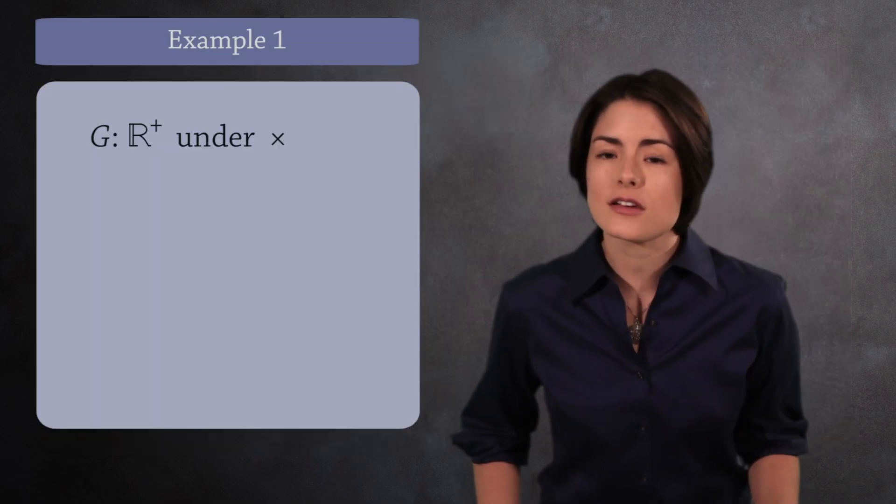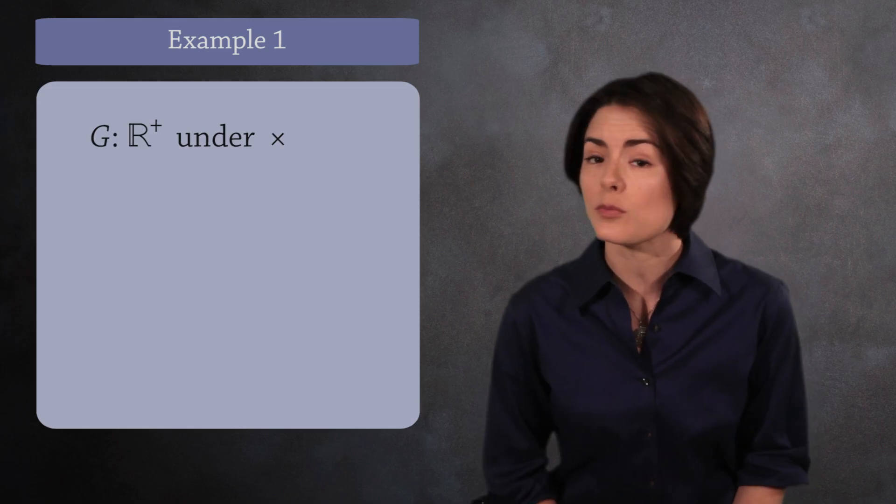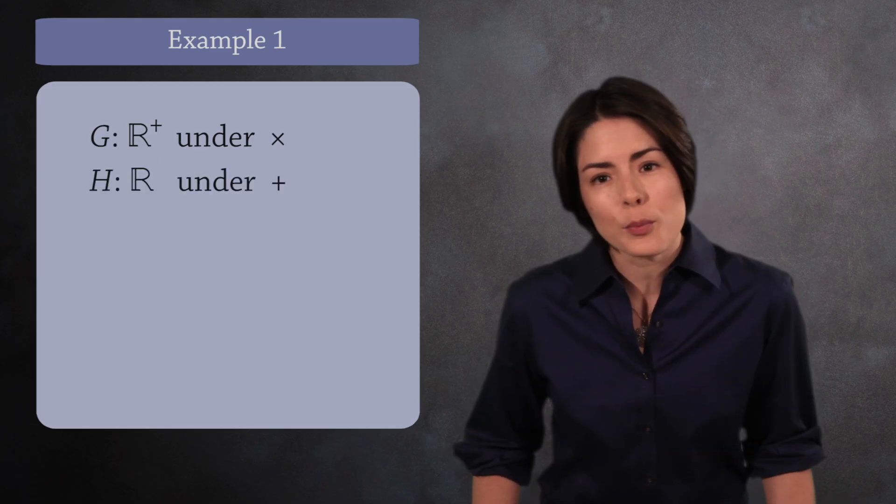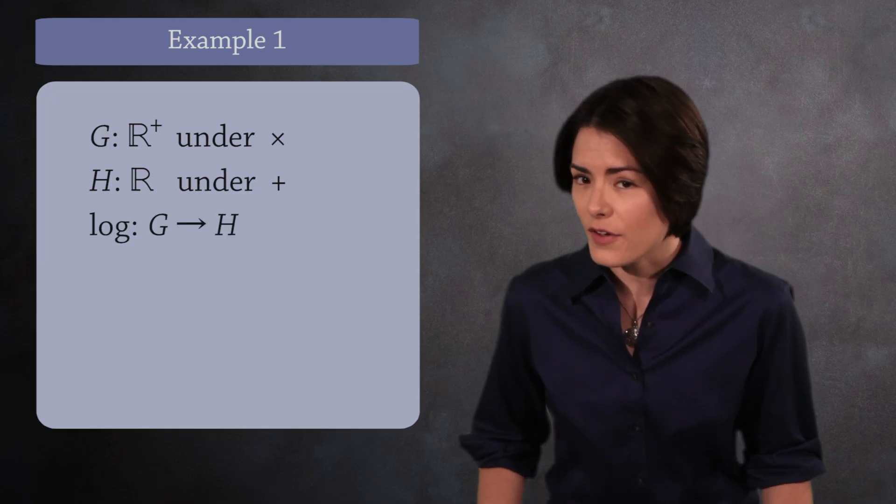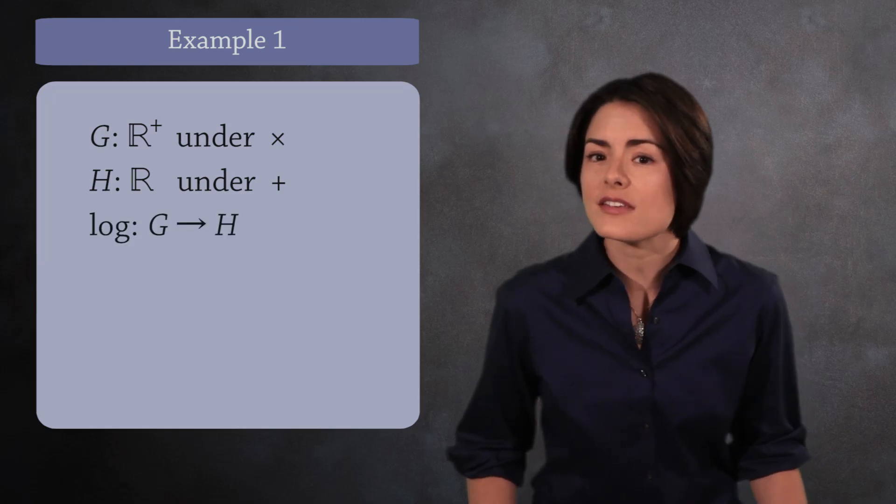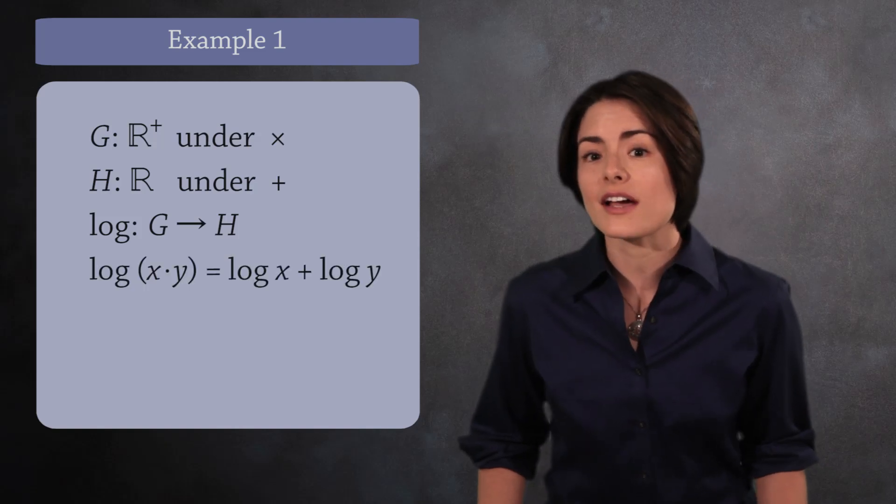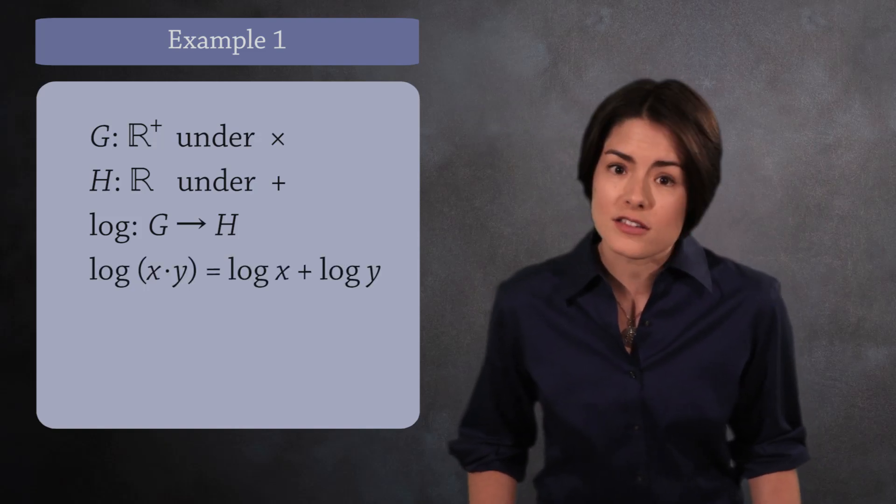For our first example, consider the groups of the positive real numbers under multiplication, and all real numbers under addition. One homomorphism between them is a logarithm function. We can check that this is a homomorphism by using the laws of logarithms. The log of x times y is equal to the log of x plus the log of y.